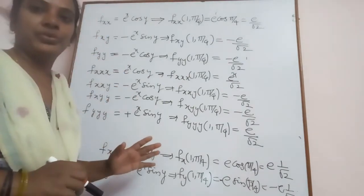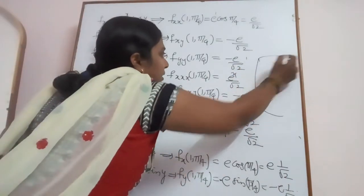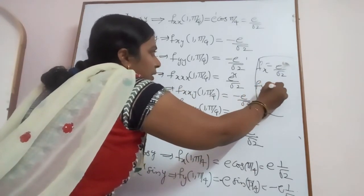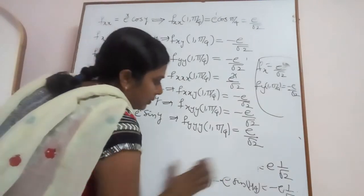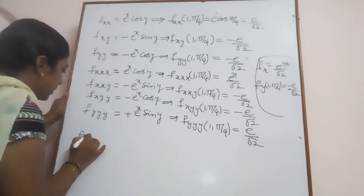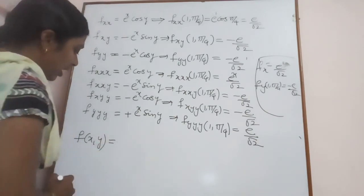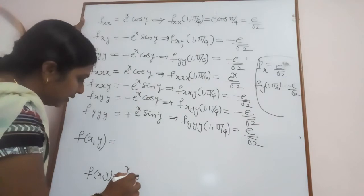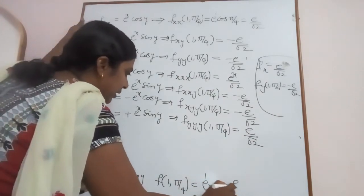We substitute all these values into the Taylor series. Note: f_x(1, π/4) = e/√2, f_y(1, π/4) = −e/√2. The function value at the point: f(1, π/4) = e¹ · cos(π/4) = e · (1/√2) = e/√2.